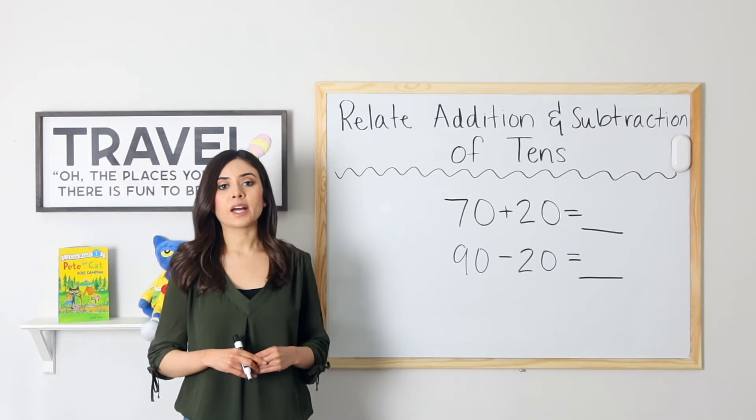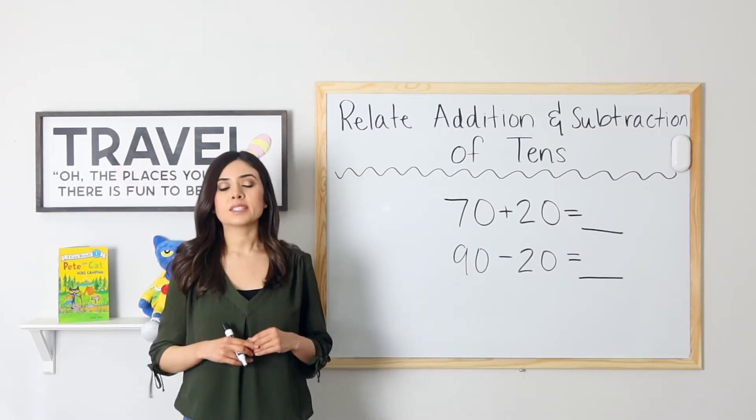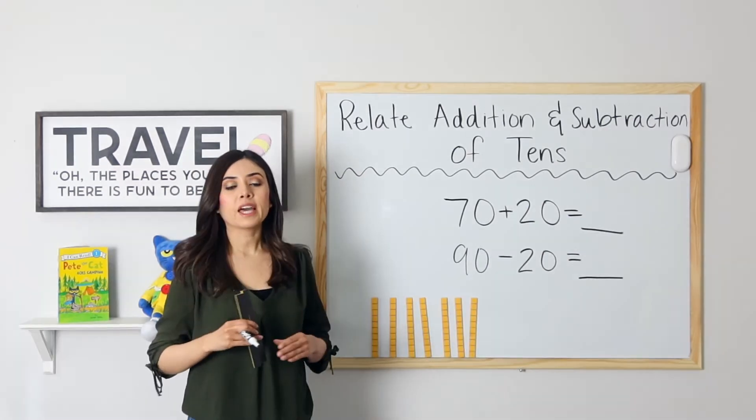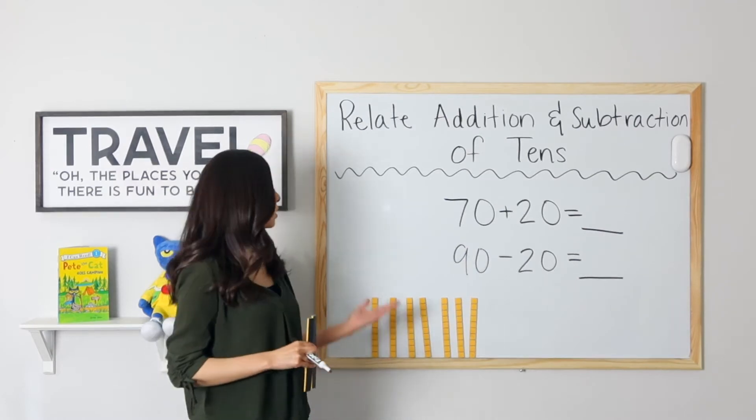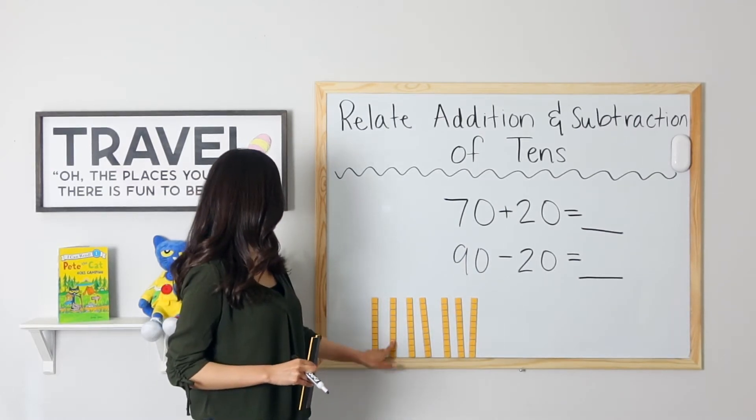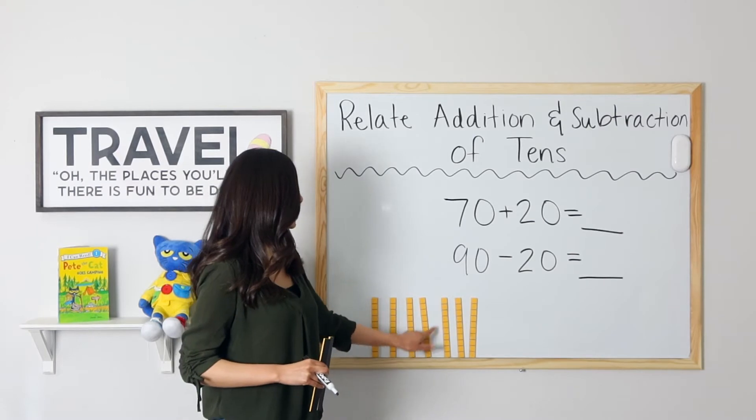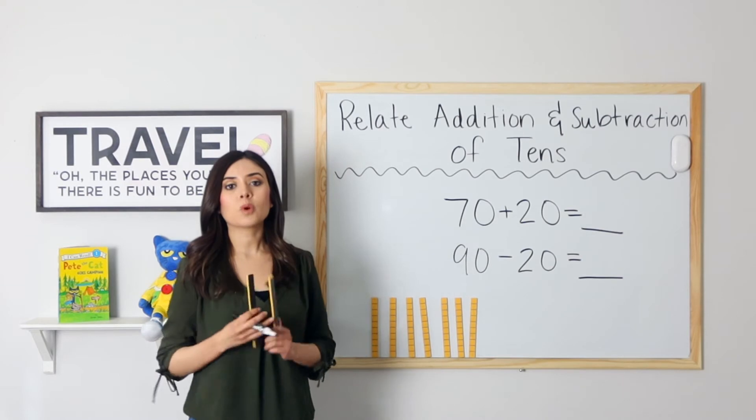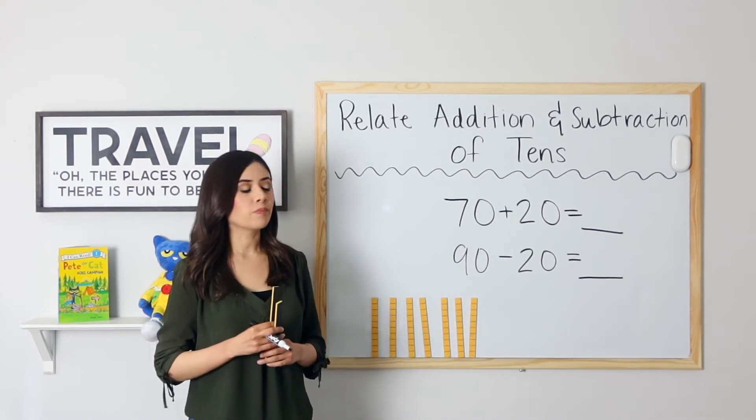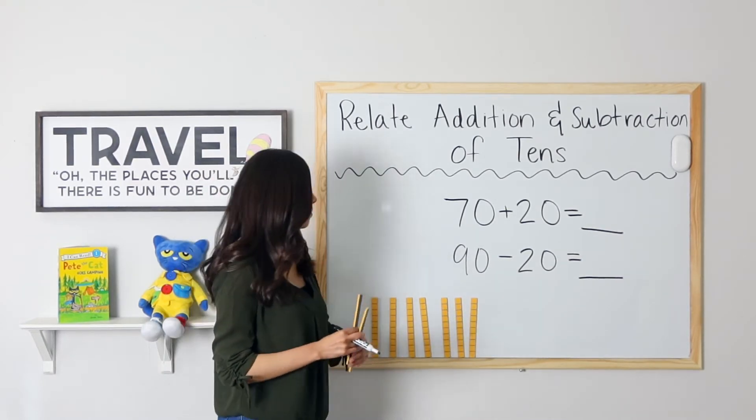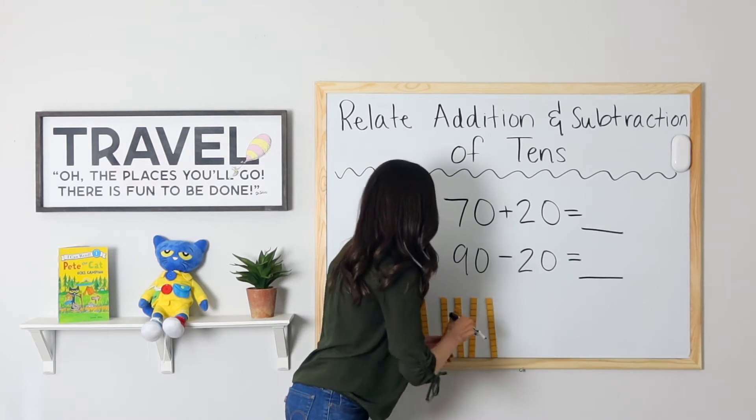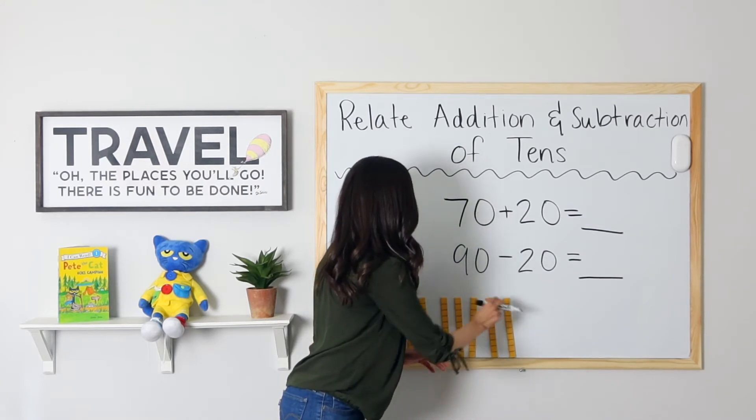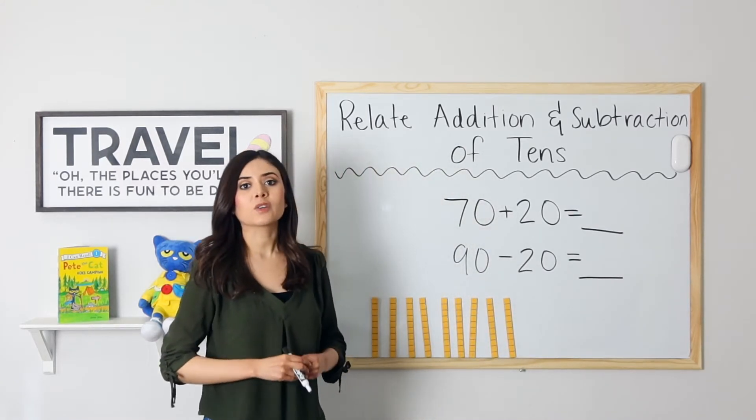Next example. I have 70 plus 20. What is 70 plus 20? I have 70 units posted on the board. 10, 20, 30, 40, 50, 60, 70. I will add 20 more to see how much I have in all. So 70, 80, 90. 70 plus 20 equals 90.